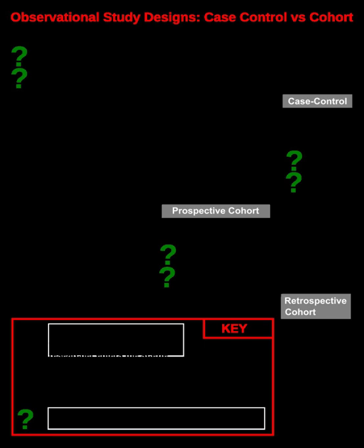A case-control study, also known as a case-reference study, is a type of observational study in which two existing groups differing in outcome are identified and compared on the basis of some supposed causal attribute.